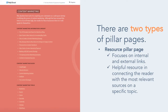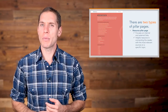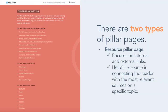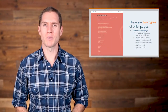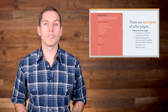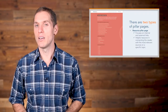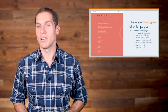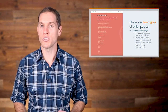The resource pillar page focuses on internal and external links. The goal of this pillar page is to be a helpful resource in connecting the reader with the most relevant sources on a specific topic, even if it means sending people off your site. For example, take a look at the pillar page Help Scout — a simple customer service company — created on customer acquisition. This resource pillar page is composed of multiple sections that offer links to internal and external resources. Generally, you wouldn't want to send people away from your website, but this approach is solving for the visitor, not your business. The biggest advantage of a pillar page format like this is you have the opportunity to generate inbound links from sources you include on the page. This page has more than 300 inbound links pointing to it, most of which are sources mentioned on the page. For this type of page, you'll need to develop an outreach plan to let the sources know the page exists.